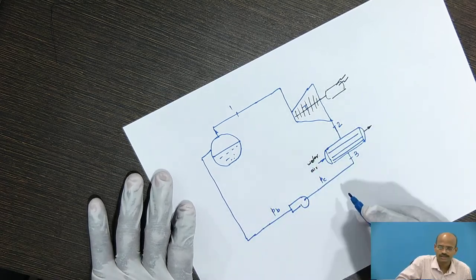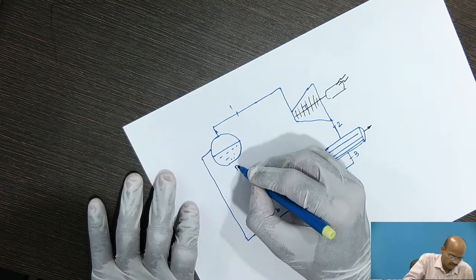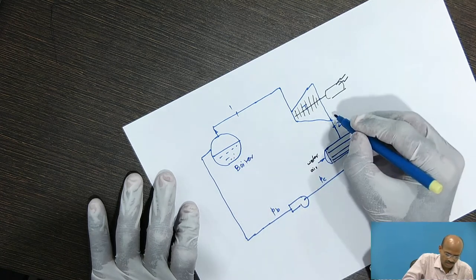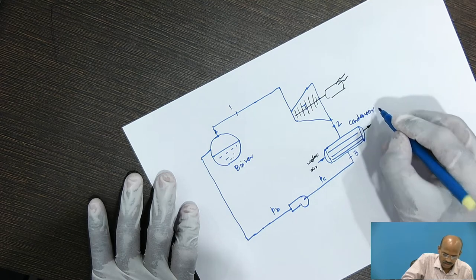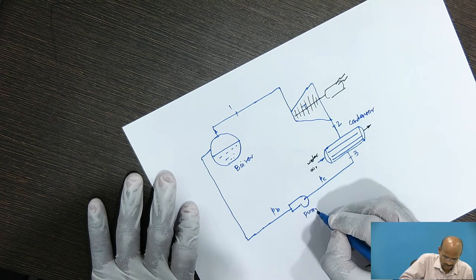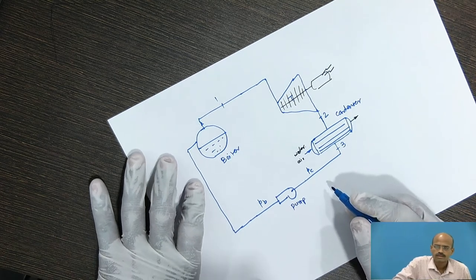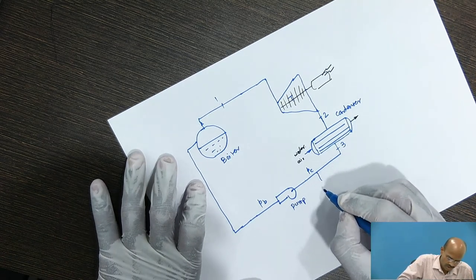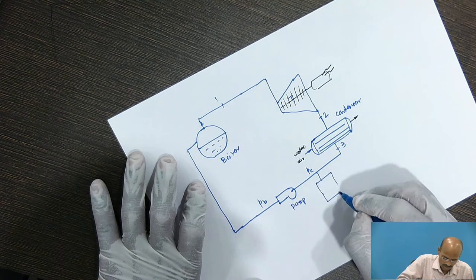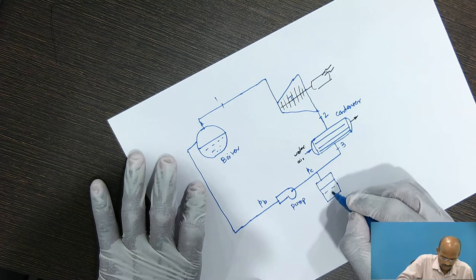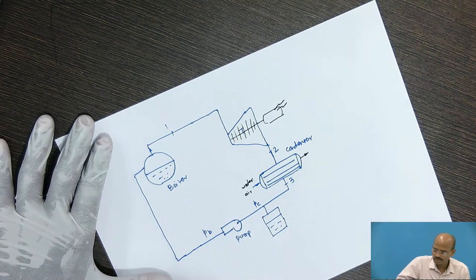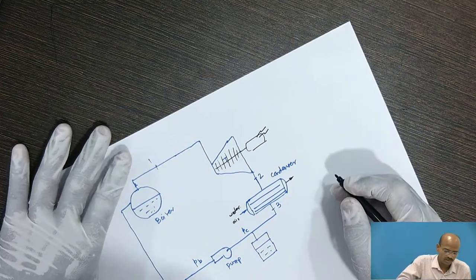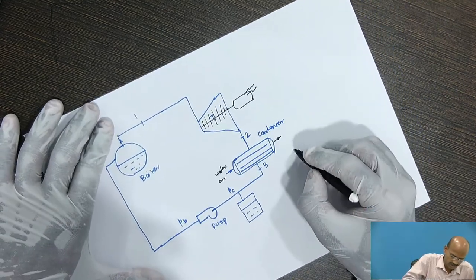It supplies to the boiler. So, this is known as Rankine Cycle. In the Rankine Cycle, there is boiler, turbine, condenser and pump. You may use the storage tank also if there is excess water is available. You could store it. Now, we will try to show this cycle on the T-s plot.